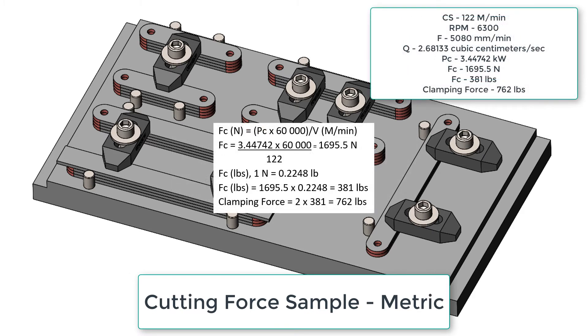And now that we know our power requirements we can calculate our cutting force in newtons. We multiply the power by 60,000 and divide by the cutting speed in meters per minute to get 1,695.5 newtons of cutting force.